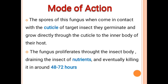Let's see the mode of action of Verticillium lecanii. When we apply the biopesticide in the farm, it comes in contact with the insect and attaches to the cuticle of the host insect. Then the fungal spores germinate under favorable conditions and grow directly into the inner body of the host insect, taking nutrients and colonizing the entire insect. The insect is eventually killed within 48 to 72 hours.